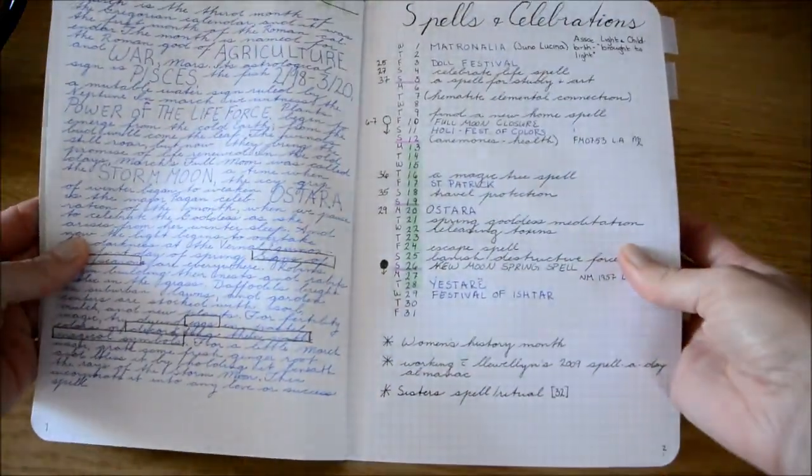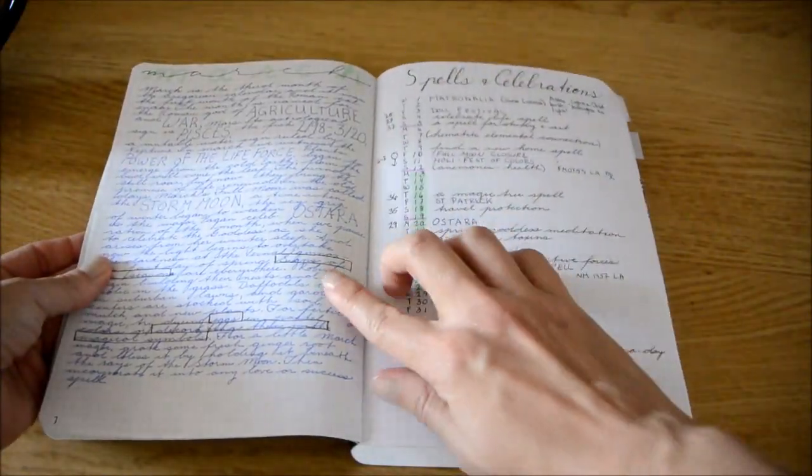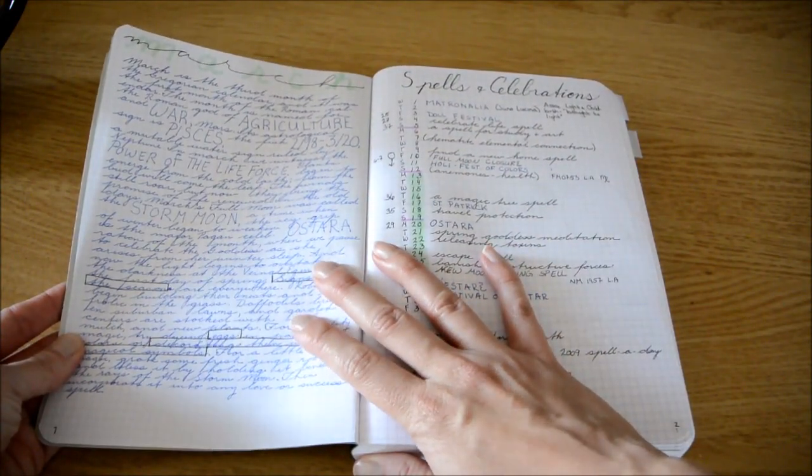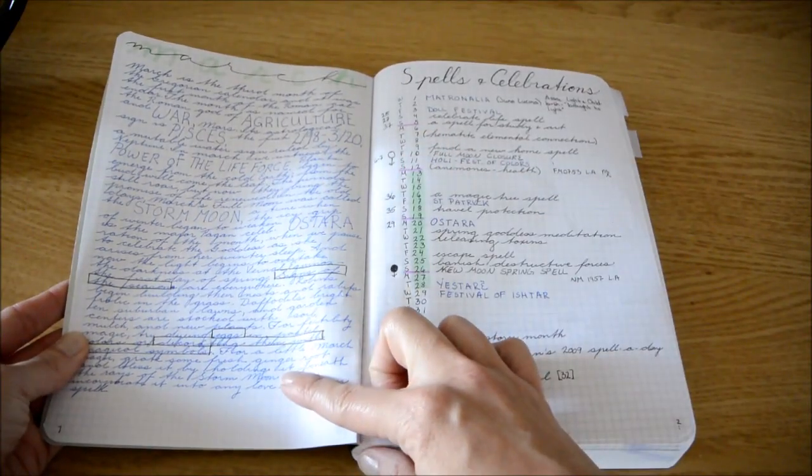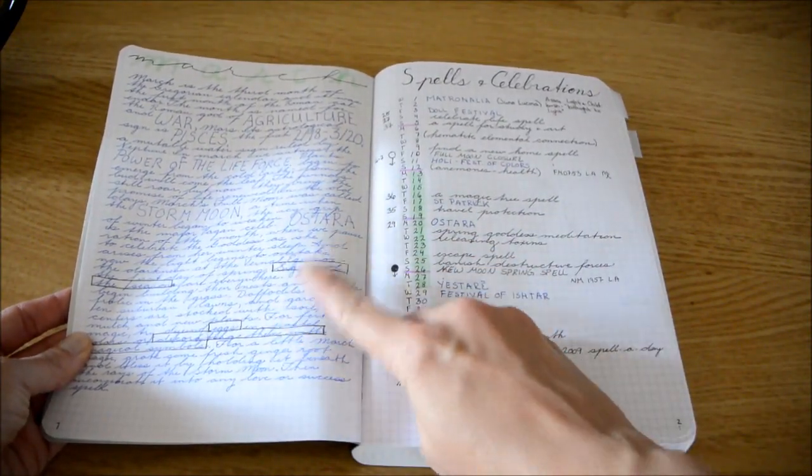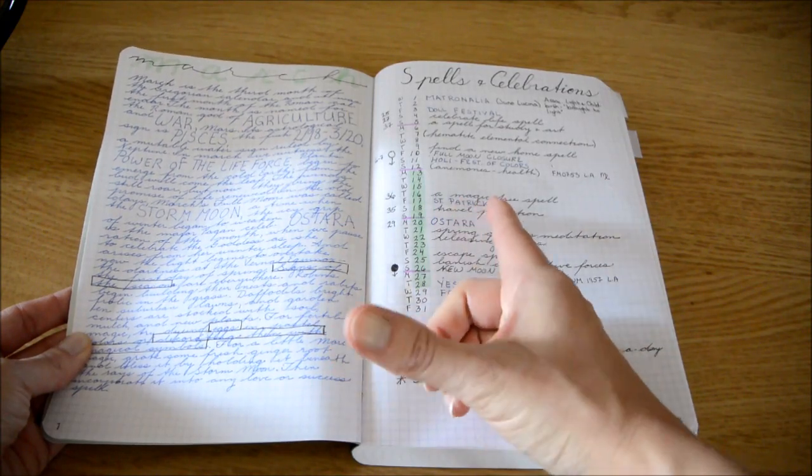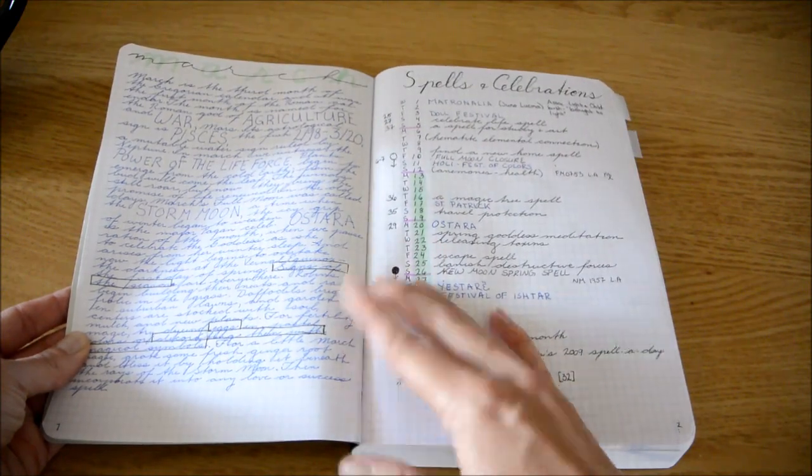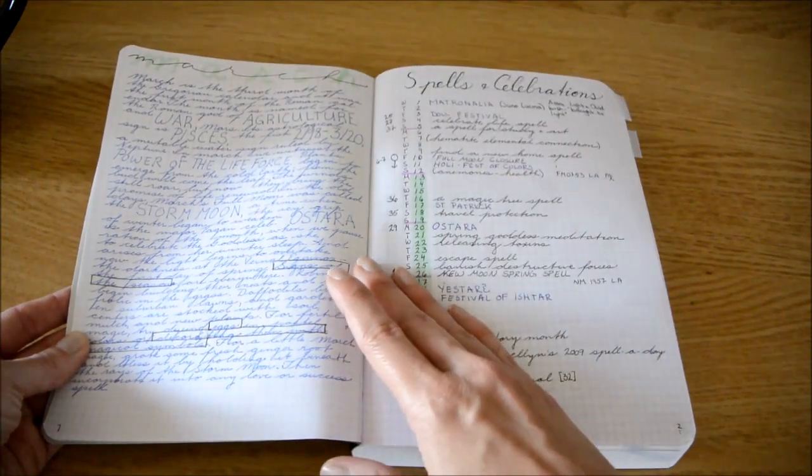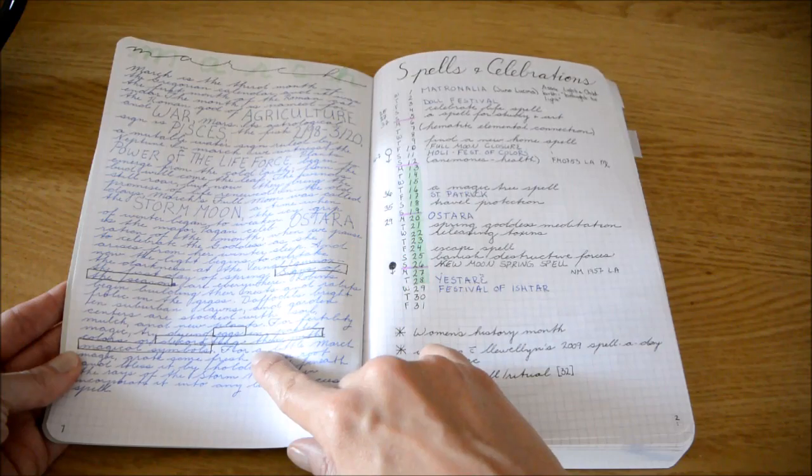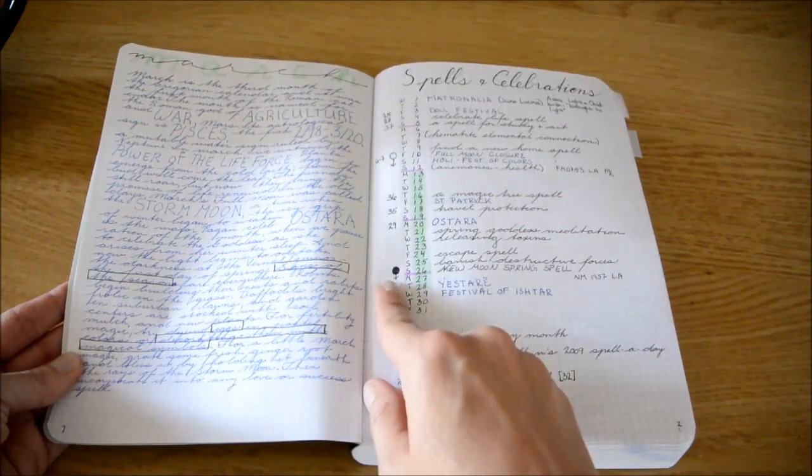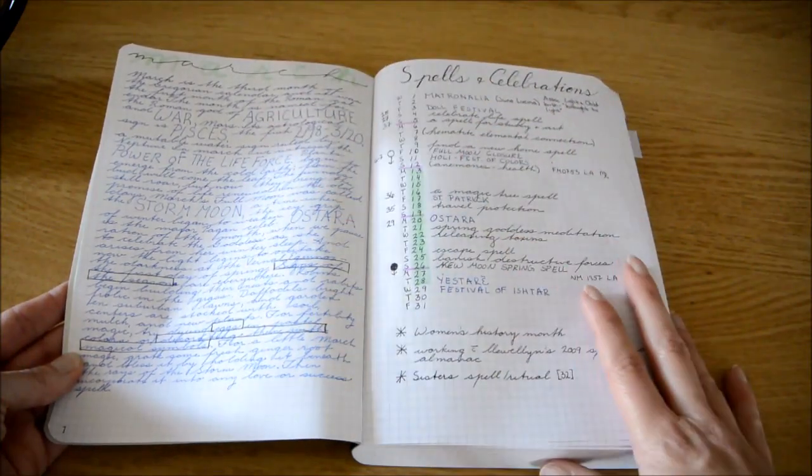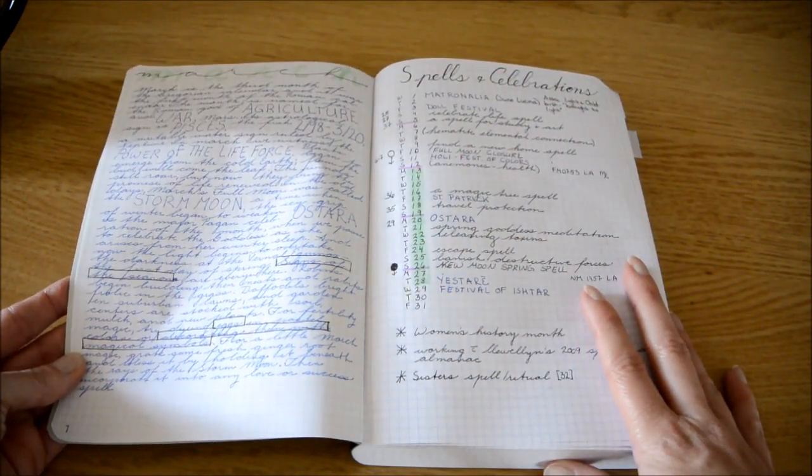So unfortunately I can't see this very well, but I took the information for the month of March, just the general information from the Almanac, and I copied it out here, kind of highlighting things that I thought were interesting or significant that I wanted to look at. Things like signs of the season, I wanted to journal about what the signs of the season are for me, eggs, decorating eggs, magical symbols, agriculture, Pisces. So all of the keywords I highlighted in some way, shape, or form.